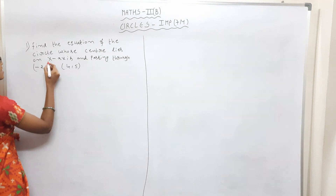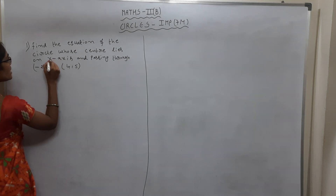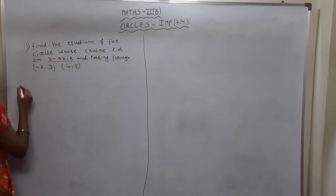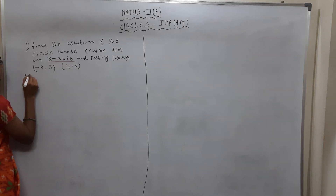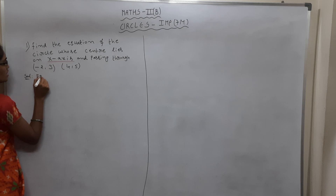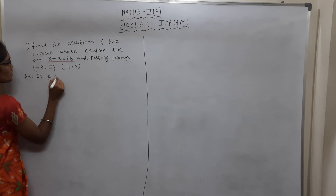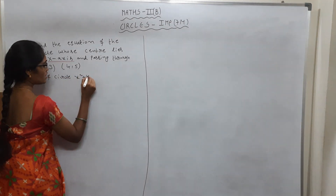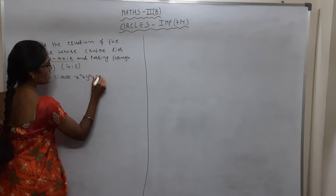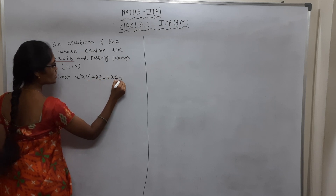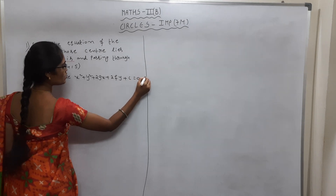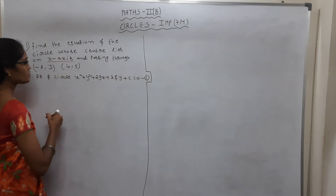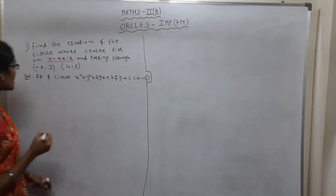The given condition is: circle whose center lies on the x-axis. Now see the solution. The equation of a circle — the first method we use — is: x² + y² + 2gx + 2fy + c = 0. Consider this as Equation 1.